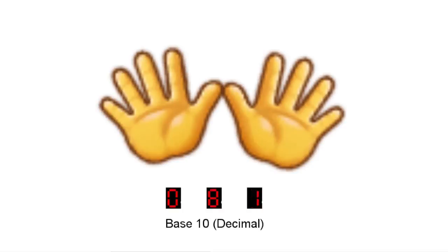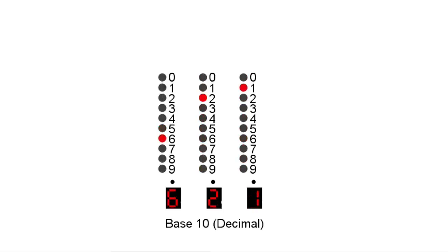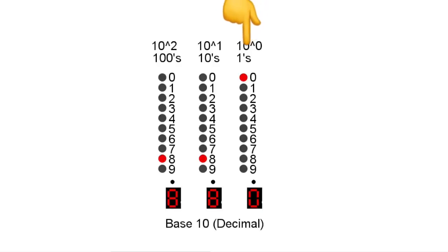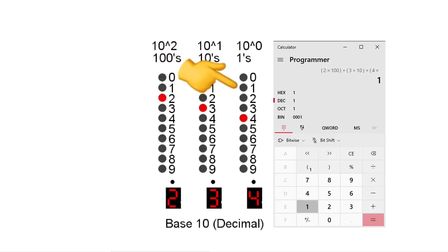Numeral digits are great for humans with 10 digits, but less so for electronic operations. Having a column of individual signals for each numeral value is a step in the right direction. The first column, the 1's column, indicates the least significant digit. Each column to the left is more significant since each column's value increases tenfold. This can be generalized as the base raised to the power of the column number, starting with a power of 0 for the 1's column. A 3-digit base 10 number such as 234 can be described as 2 times 100, plus 3 times 10, plus 4 times 1.